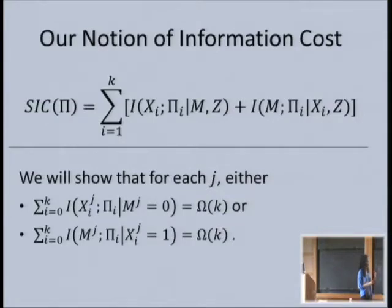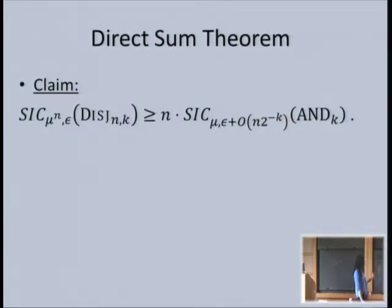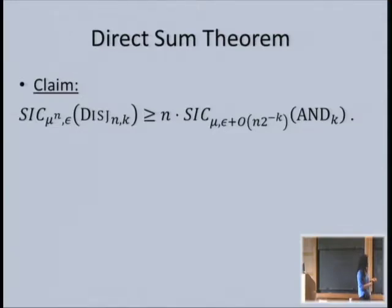We call this 'switched information cost,' because of this switch that makes a coordinate hard or easy. The first thing we are going to do—the standard approach for these lower bounds—is prove a direct sum theorem. We want to prove that the information cost of solving set disjointness with n bits and k players under the product distribution μ^n is as hard as solving n copies of AND with a slightly higher error and the hard one-bit distribution.